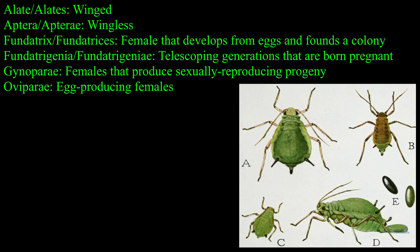A female that develops from eggs and founds a colony is a fundatrix, and fundatrices usually produce parthenogenetic clonal progeny, which are known as fundatrigeniae, telescoping generations that are born pregnant. Alate fundatrigeniae may move from the host on which they were born to secondary hosts seasonally. Those females that go on to produce sexually reproducing progeny are called gynoparae, and their egg-producing females are oviparae. Oviparae produce eggs which usually overwinter and result in new fundatrices in the spring.